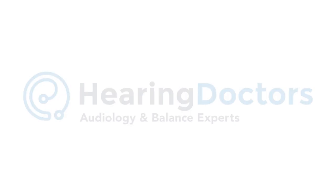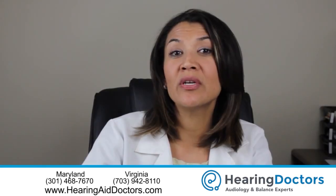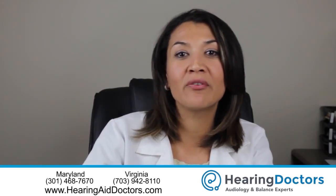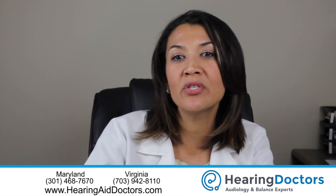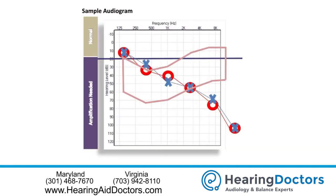In this video I'm going to show you how to interpret an audiogram, which is the graph showing the results of the pure tone hearing test. This is a comprehensive test to quantify your hearing range. The audiogram illustrates the type, degree, and configuration or pattern of a hearing loss across the speech spectrum.